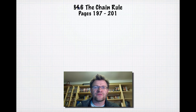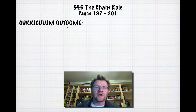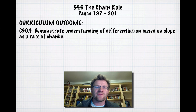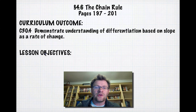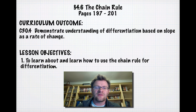Today's lesson is 4.6 The Chain Rule, on pages 197-201 in your text. Our curriculum outcome is to demonstrate understanding of differentiation based on slope as a rate of change. Our lesson objective is to learn about and learn how to use the Chain Rule for differentiation.